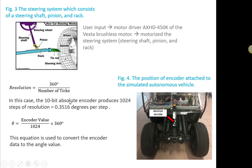And then, in this case, we are using a 10-bit absolute encoder, which produces 1024 steps with a resolution of 0.3516 degree per step. And then, the second equation is used to convert this degree value into angle value, which is required by the system.